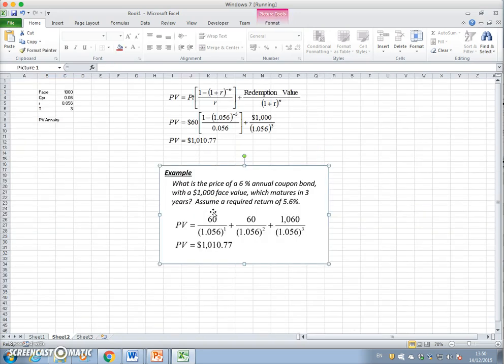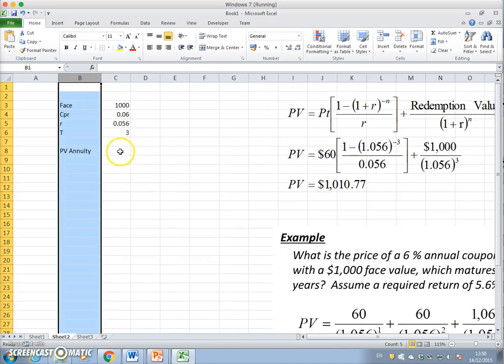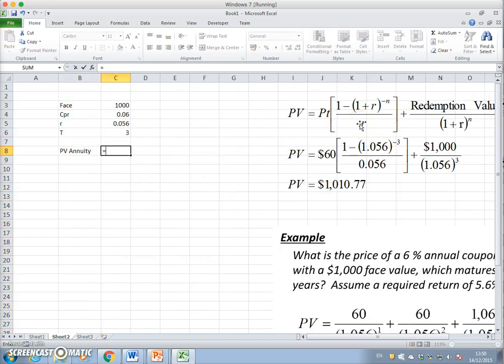So what we want to do is write the present value annuity factor: 1 minus (1 + r) - that's 0.056 - to the power of negative n, negative 3. We need to incorporate negative 3, close off brackets, and then divide by r, and underneath we have 0.056. That's 2.692.